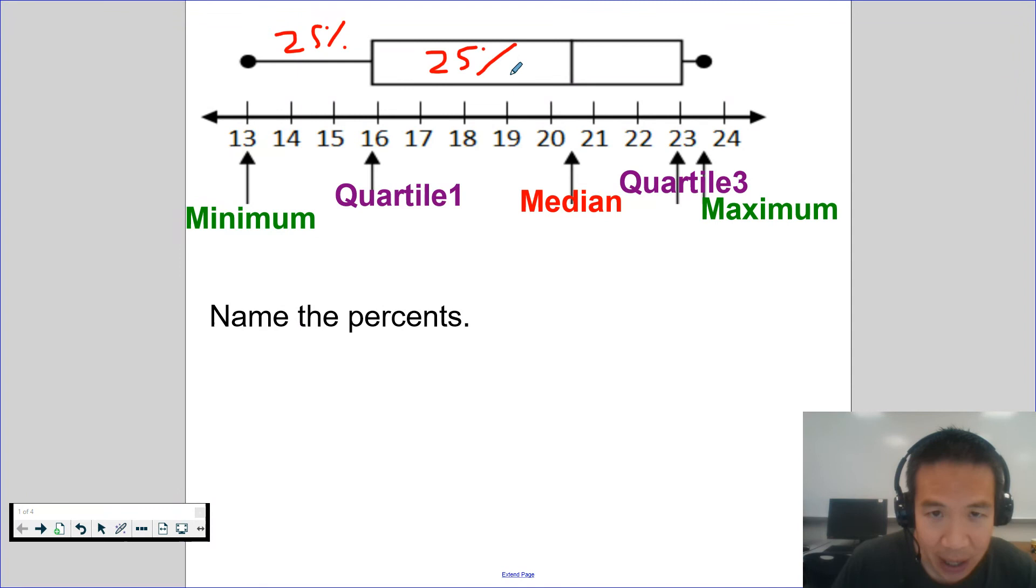25%. That means half of the data is between 13 to 20 and a half, or 50%. What percent is between 20 and a half to 23? 25%. And last but not least, what percent is between 23 to 23 and a half? 25%. So if we add up the grand total of all the percents, it should be 100%. So 100% of the numbers are between 13 through 23 and a half.